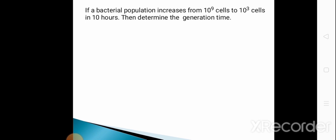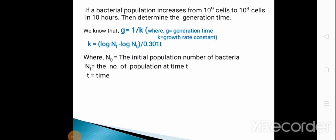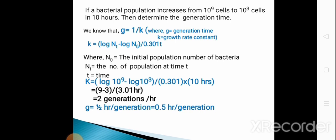Next question: if a bacterial population increases from 10³ cells to 10⁹ cells in 10 hours, determine the generation time. We use the formula g = 1/k, where g is the generation time and k is the growth rate constant. Using k = (log Nt − log N₀) / (0.301 × t), with N₀ = 10³, Nt = 10⁹, and t = 10 hours, k = 2 generations per hour. Therefore g = 1/2 = 0.5 hours per generation.